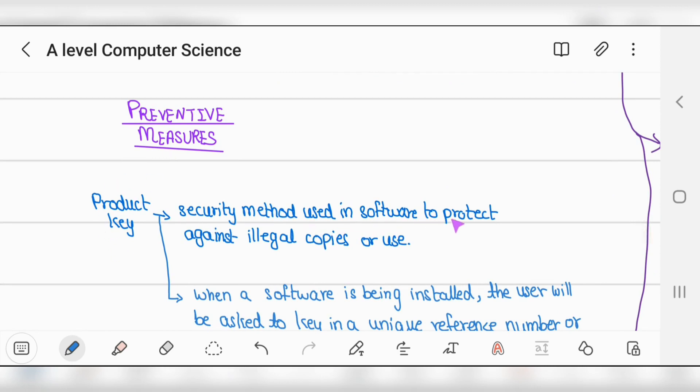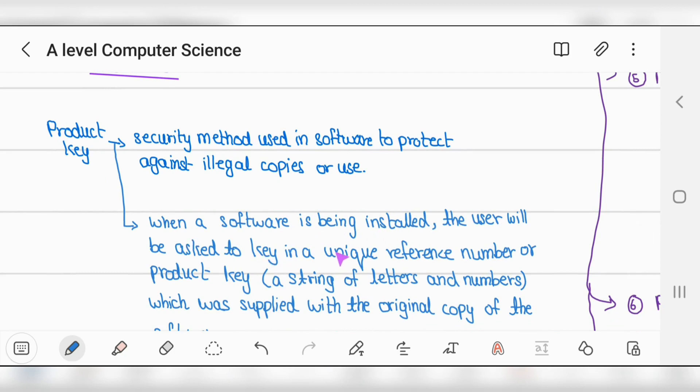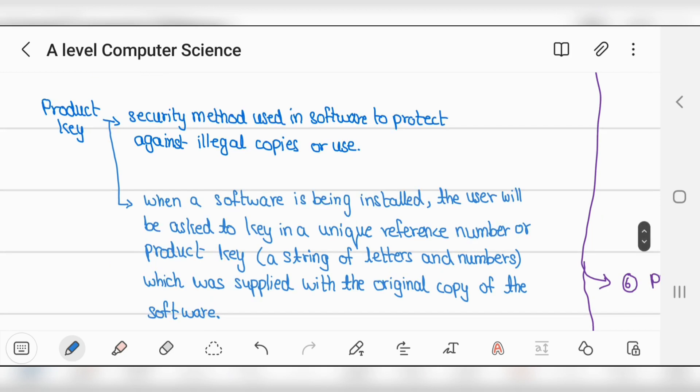Software piracy - making illegal copies - is a major issue. Product key is a security method to protect against illegal copies. When installing software, the user is asked to key in a unique reference number. For example, purchasing Microsoft Office gives you a product key. This prevents copyright violations and is widely used.